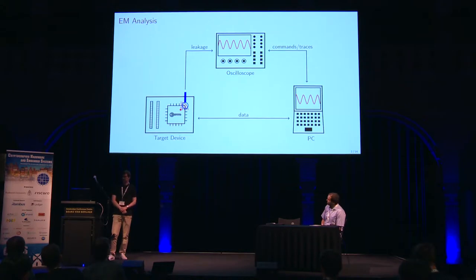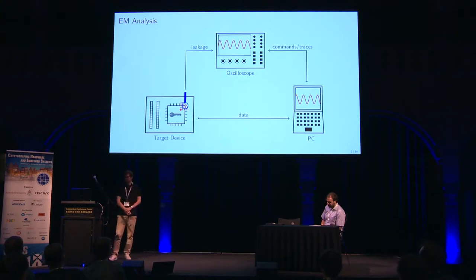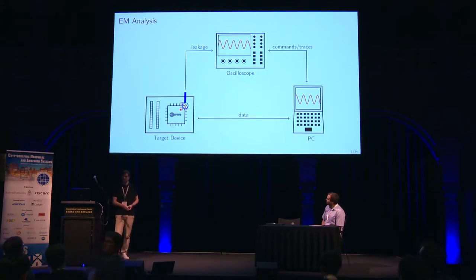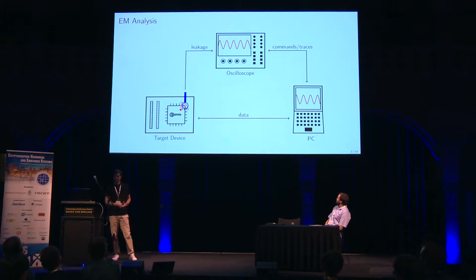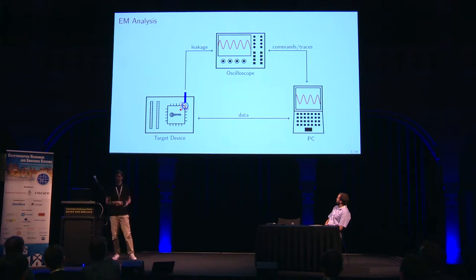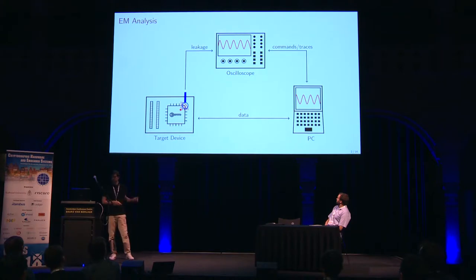How does EM analysis work? The attacker wants to recover some secrets — usually a secret key — from a target device. The attacker observes computations with that key and captures the leakage from the device using an oscilloscope. After observing several operations and the associated data using statistical techniques, the attacker can recover the secret. In this work, I focus only on electromagnetic analysis.